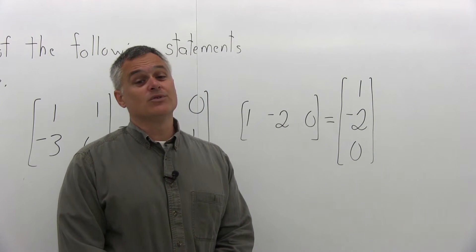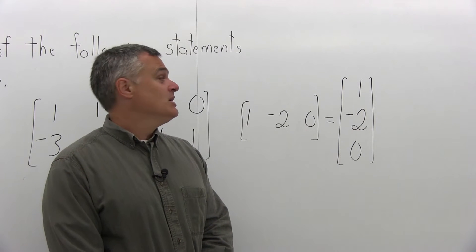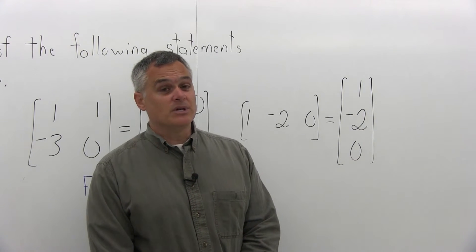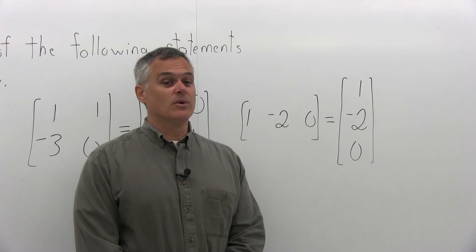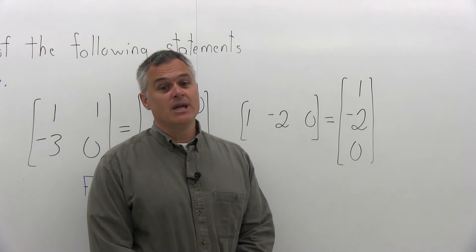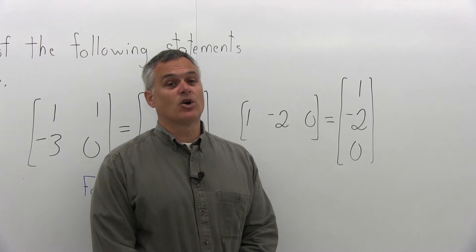One for the top row, negative 2 for the middle row, and 0 for the bottom. Even though it has the same numbers in the same order, they're not equal because one has those numbers listed as a row and the other has them listed as a column.